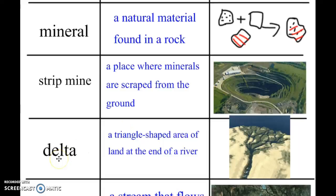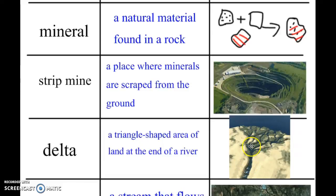Then we have delta. A delta is a triangular shaped area of land at the end of a river. I like this picture because it really showed you the river and how when a river flows, it carries sediment — which I think is a word you know from science — and deposits the sediment at the end of the river, making it look almost like a tree. And you can see the triangle shape too.